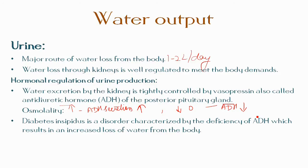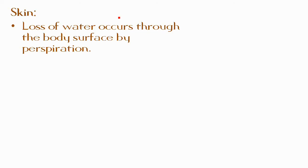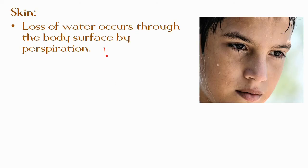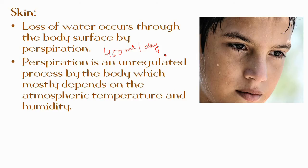Diabetes insipidus is a disorder characterized by deficiency of ADH, which results in increased loss of water from the body. The next route of water loss is through the skin. Loss of water occurs through the body surface by perspiration — about 450 ml per day. This is an unregulated process that mostly depends on atmospheric temperature and humidity, and loss is greater in hot climates. Fever also causes increased water loss through the skin.